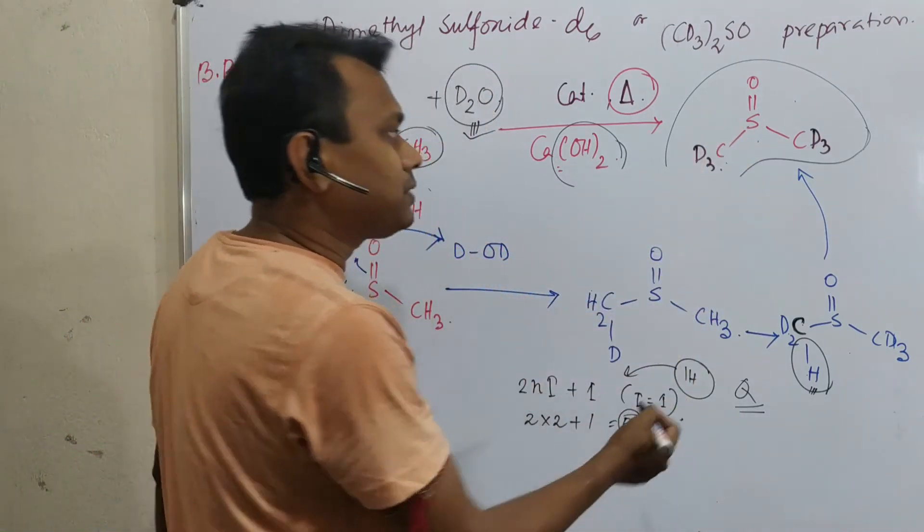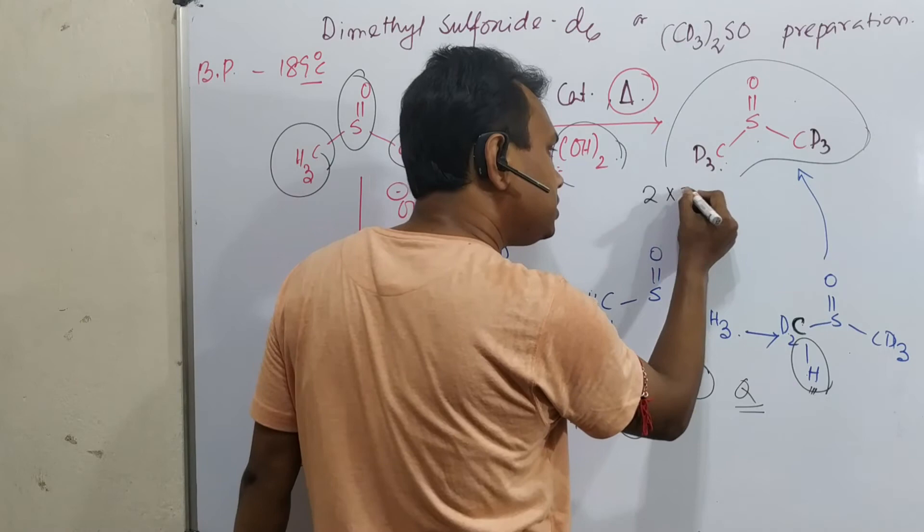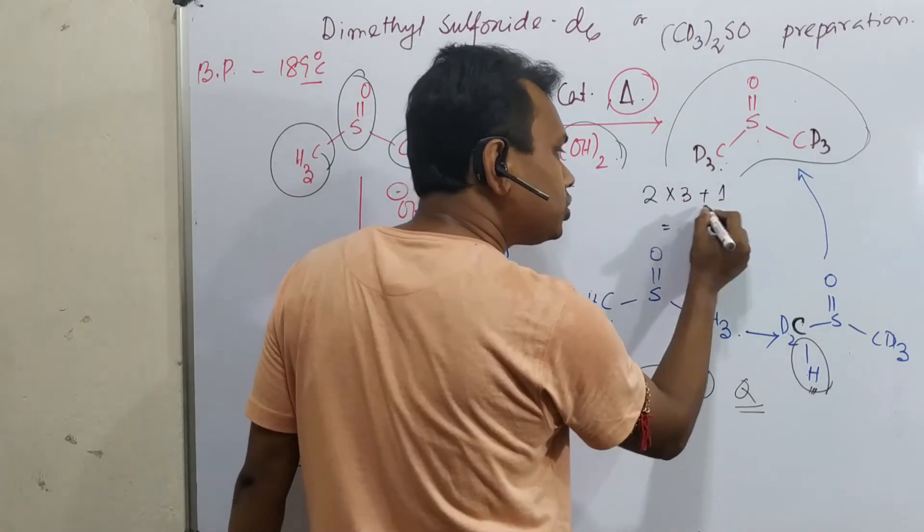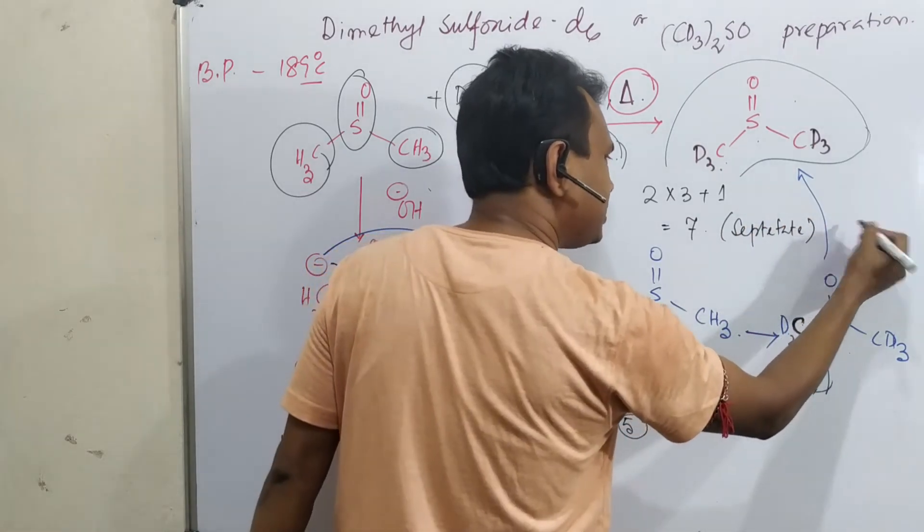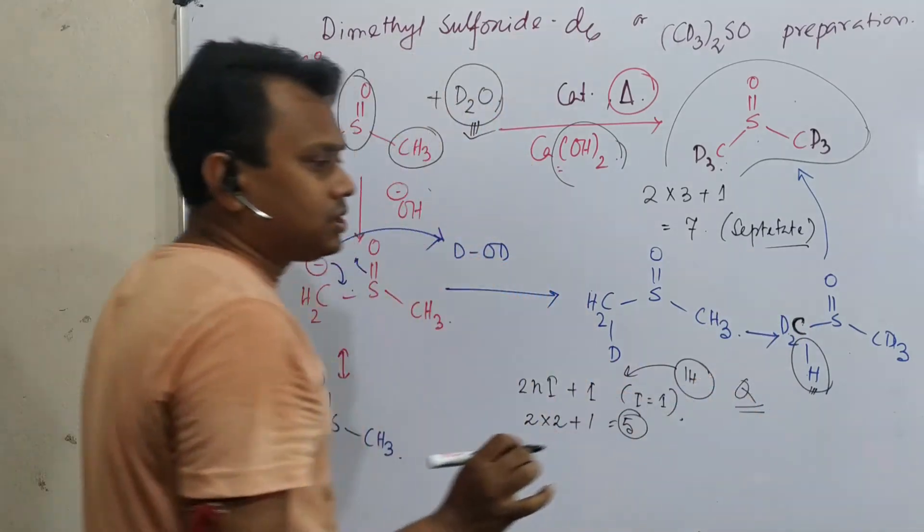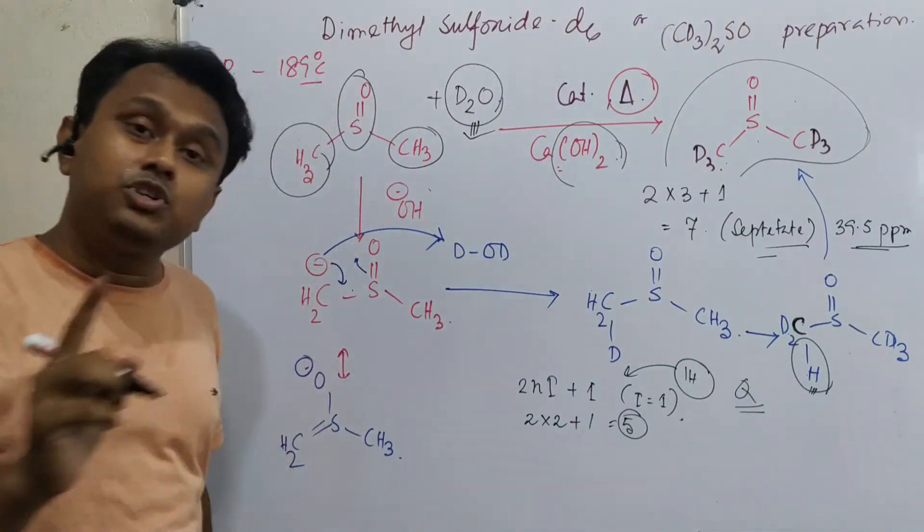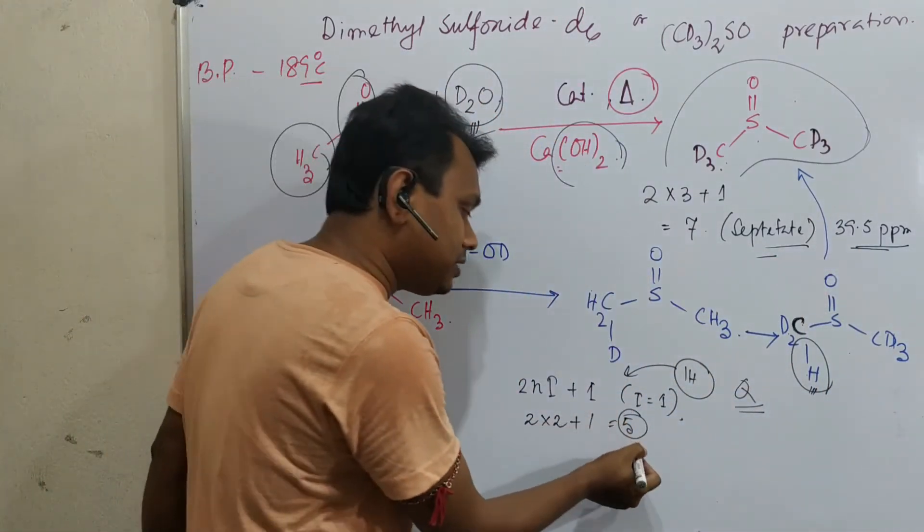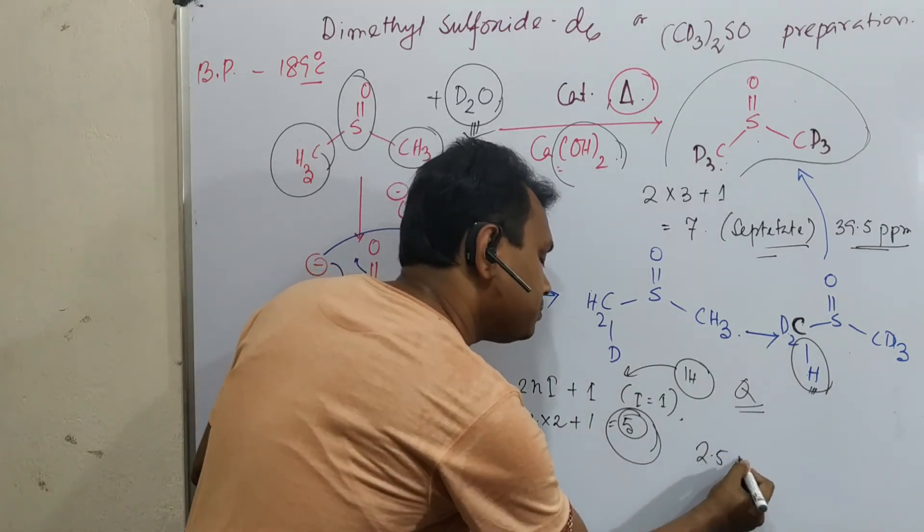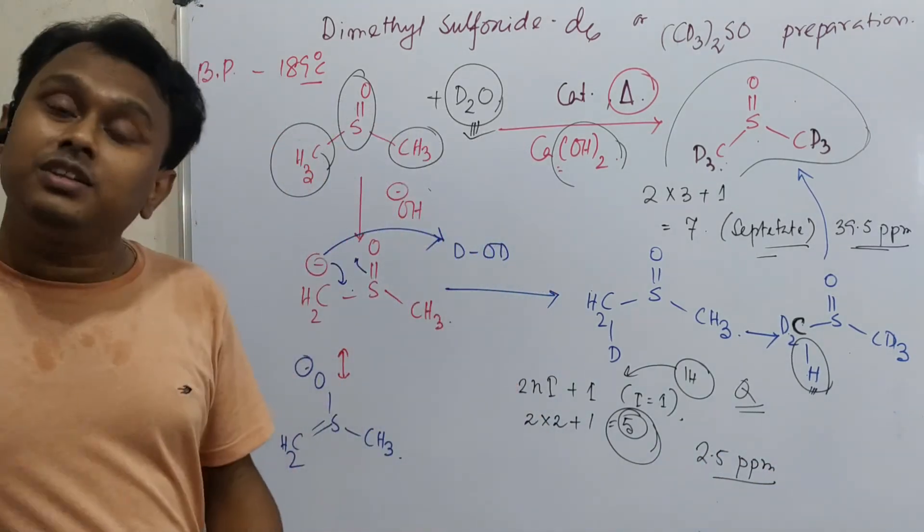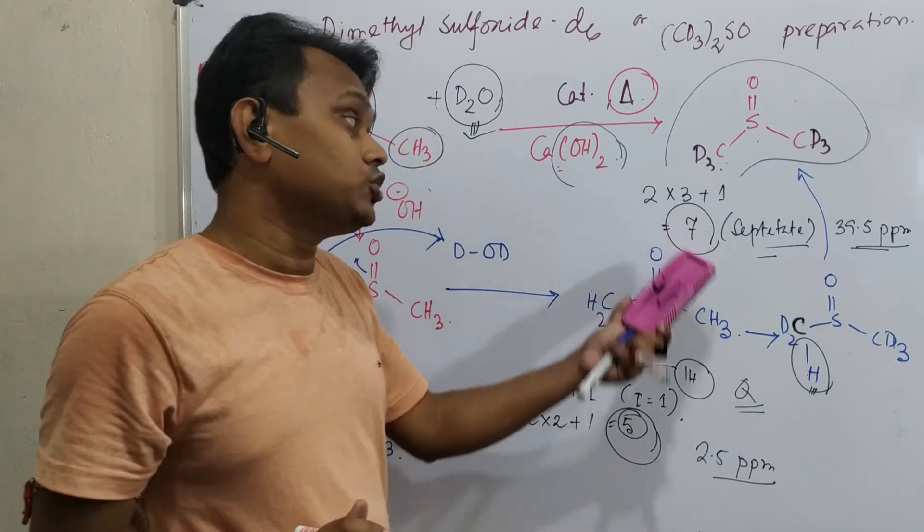See, in this case, deuterium, 2nI plus 1. So in this case there are 3 deuteriums attached. So 2 into 3 plus 1. Now what it will produce? 7 means septet. So near about 39 point something, I guess near about 40, I forgot exactly. So 39.5, near about, this gives NMR peak septet. Majority of students make mistake - what is the proton NMR peak, why it is pentet? DMSO-D6 gives proton NMR solvent peak near about 2.5 ppm pentet, whereas it gives 39.5 ppm in 13C NMR, it's a septet. I think you should not make any mistake because this question could be asked in your exams.